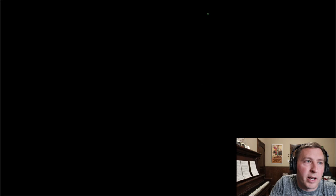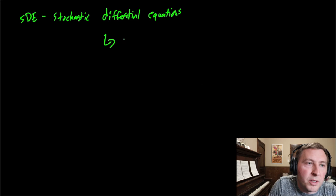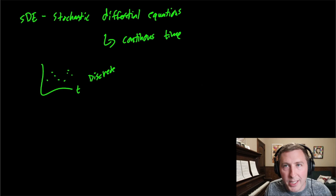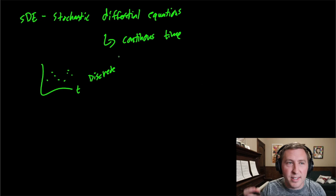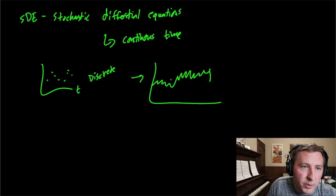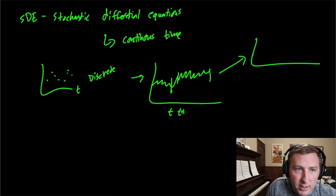SDEs, which are known as stochastic differential equations, are used in something called continuous time. When we think about a standard plot and data points, that's what we call discrete because we have a data point at each point. In continuous time — think about calculus, differentiable at any point in time — if you have a process and you take a clip from time T to time T plus one, it's actually going to look like this upward movement when you zoom in on it.